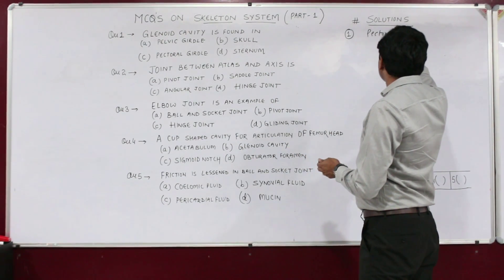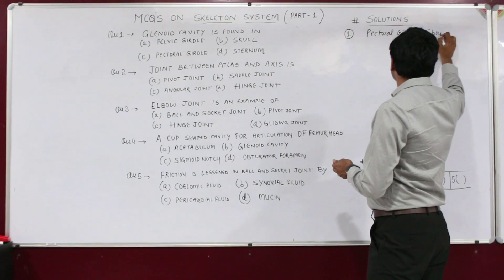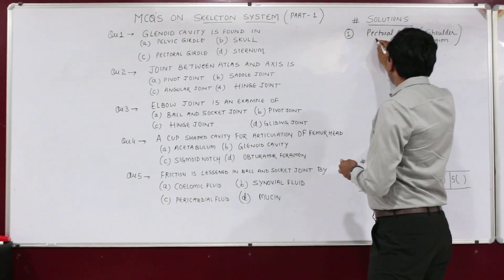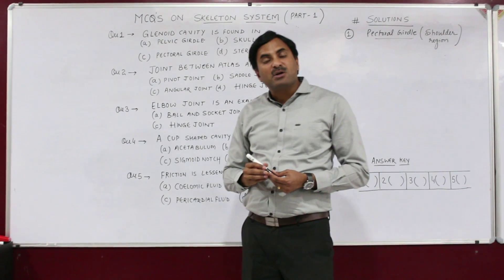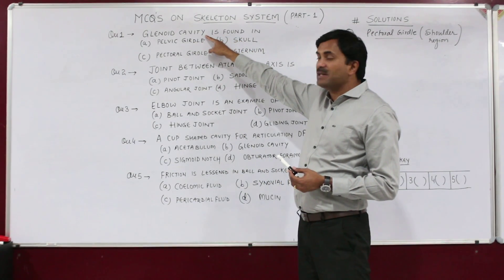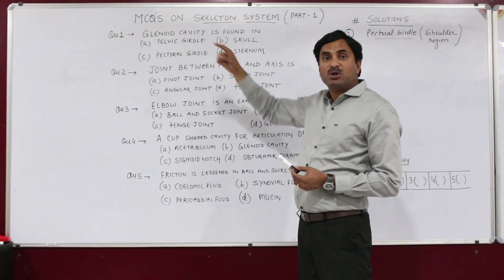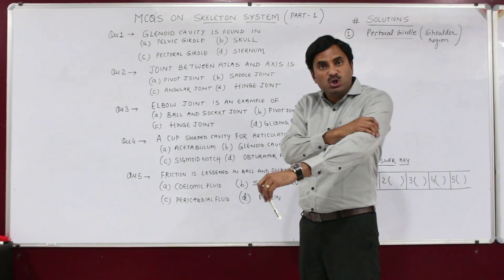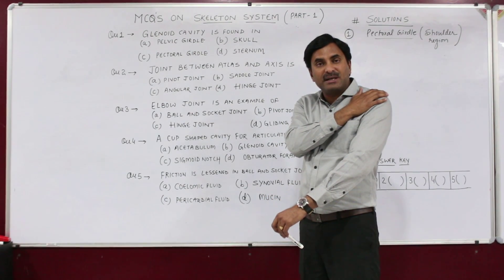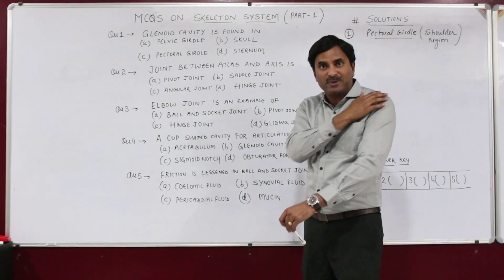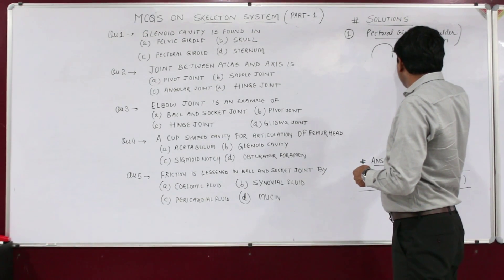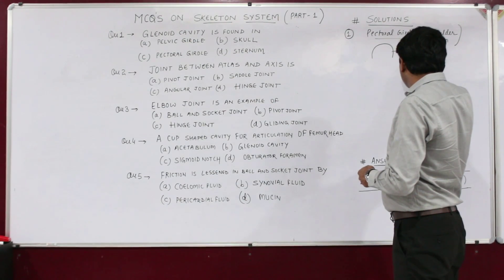The pectoral girdle is found in the shoulder region, and that's why it is also called the shoulder girdle. This glenoid cavity is meant for the attachment of the head of the humerus, so that at the pectoral girdle a ball and socket joint can be formed.